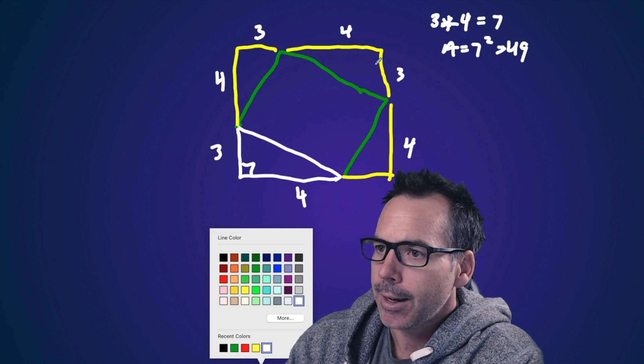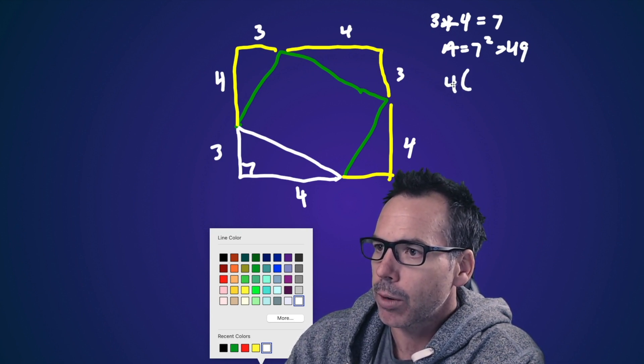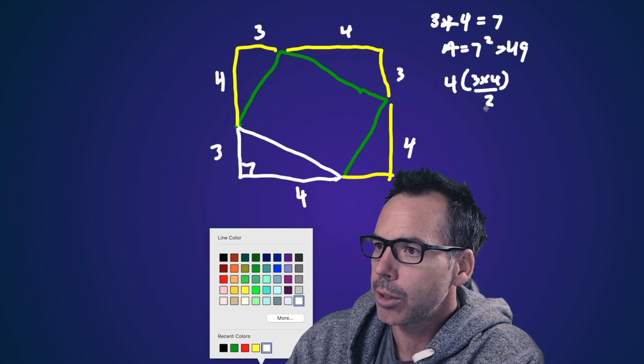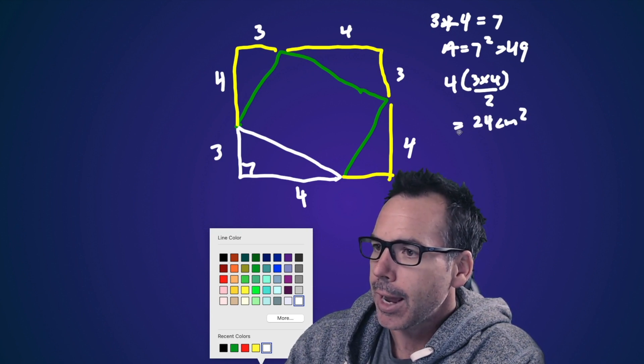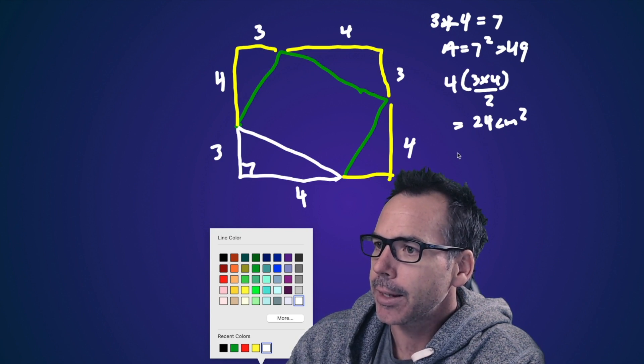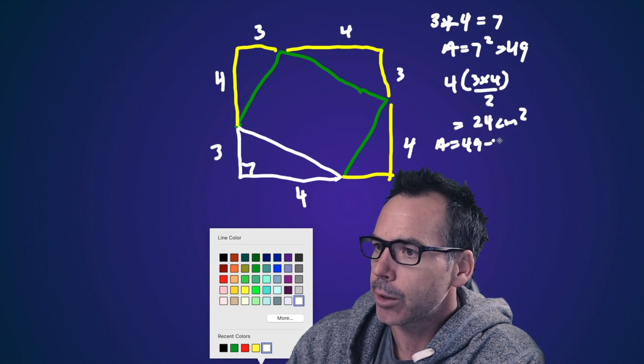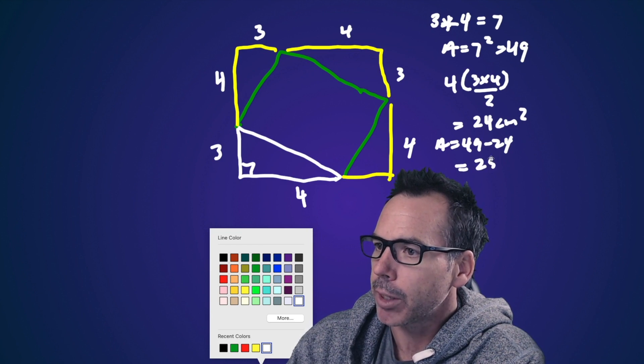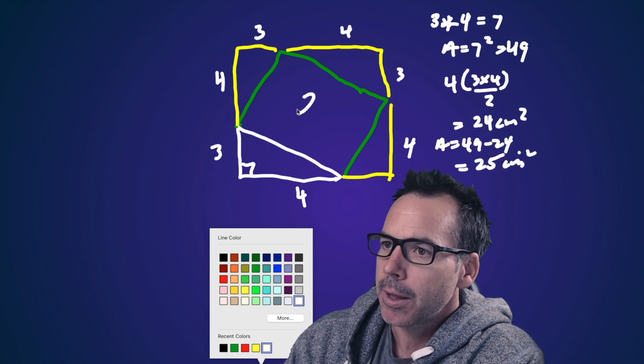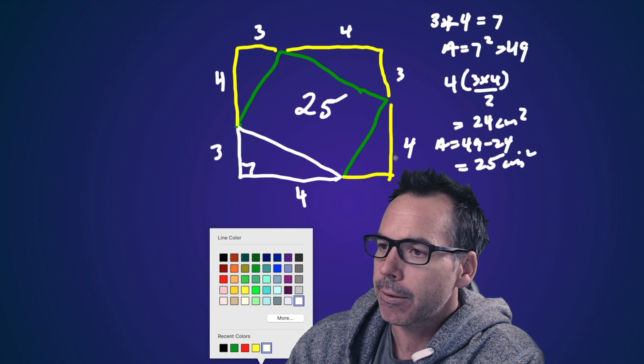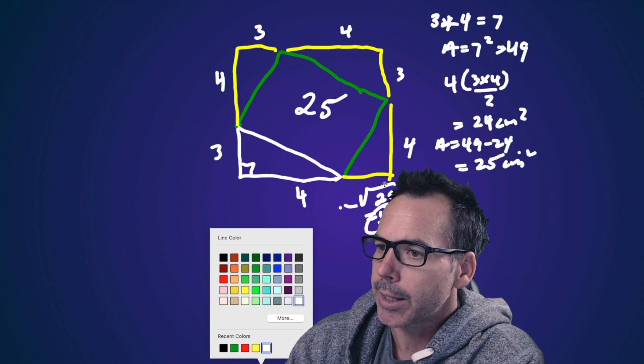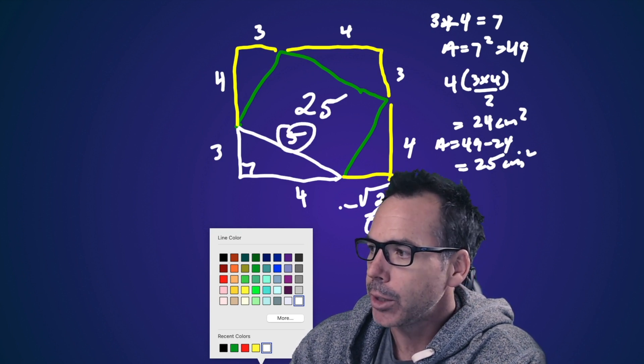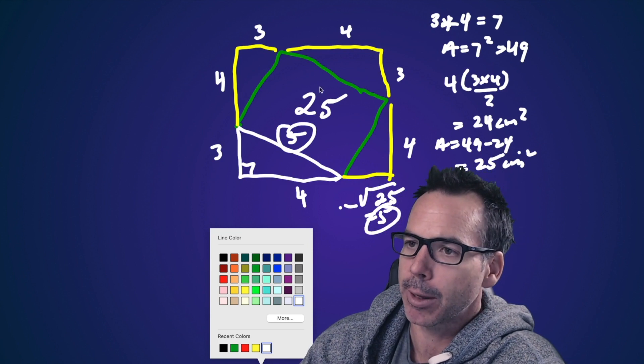And then I have four congruent triangles. So four triangles of three by four divided by two. So that's 12, six. Six times four is 24 units squared. And now I can subtract the two. And when I subtract the area of 49 and 24, voila, I get my 25 square units. This area is 25. And what will we do? We will find the root of that square to find its side length. Voila, we do not need the Pythagorean theorem.